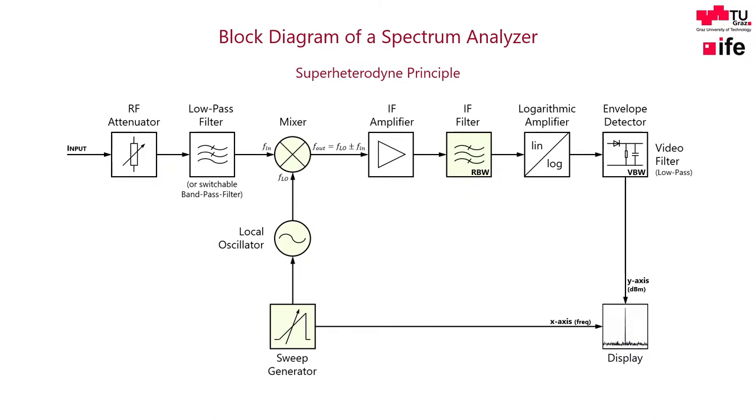The block diagram of a superheterodyne spectrum analyzer may look complicated at first. To understand the basic principle, I have highlighted the most important blocks here in green. The input signal will be mixed with a known locally generated frequency. This frequency changes with time and is responsible for each point on the x-axis. At the same time, the mixed output will be filtered by a fixed bandpass filter. The desired information for the y-axis can be found within the envelope of the filtered signal. The bandwidth of that filter is called resolution bandwidth, abbreviated as RBW.